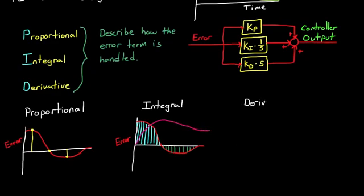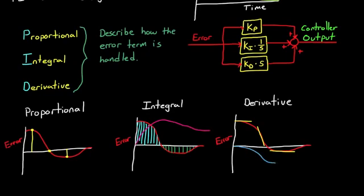Now in the derivative path, it's the rate of change of the error that contributes to the output signal. When the change in error is moving relatively slowly, like it is at the beginning here, then the derivative path is small. And the faster the error changes, the larger the derivative path becomes.